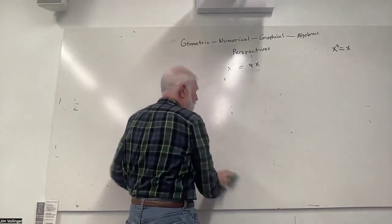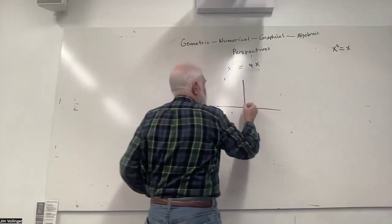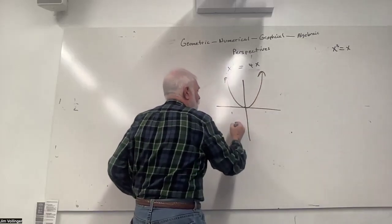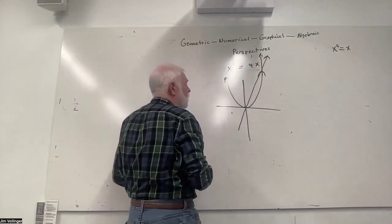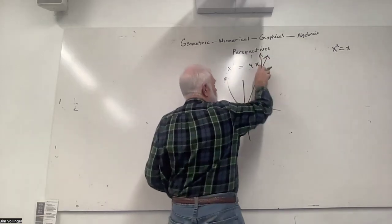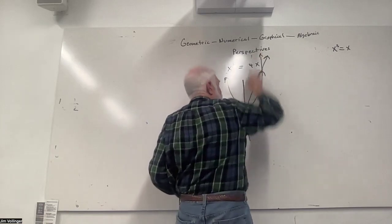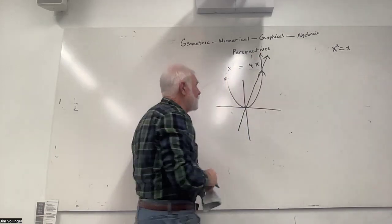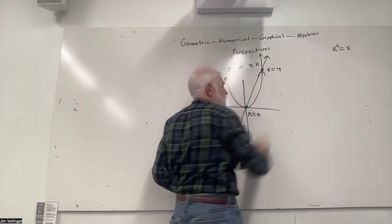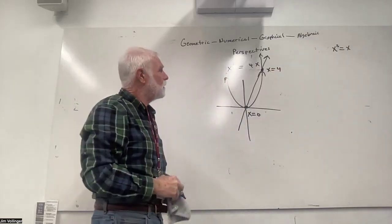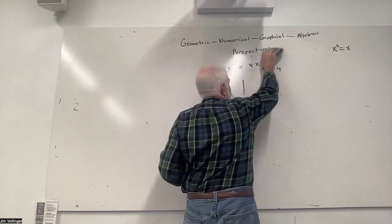From a graphical perspective, if we put this data on a coordinate plane, x squared gives the signature parabolic curve and 4x gives a linear function. We see the acceleration from that table — as x gets past 4, the parabola is going up faster. The y-values are diverging. The points of intersection are at x equals zero and x equals four.